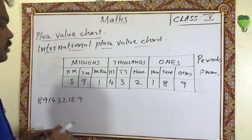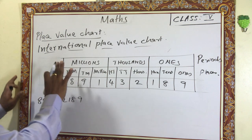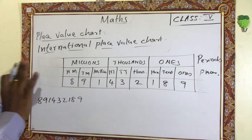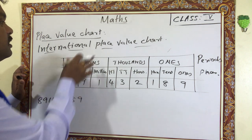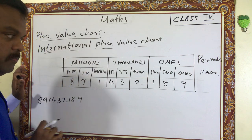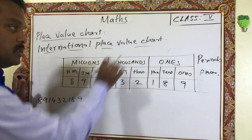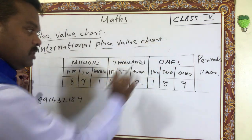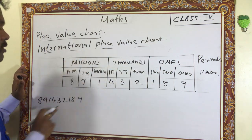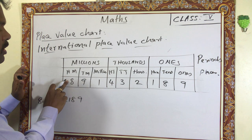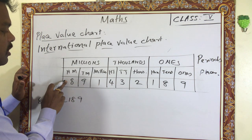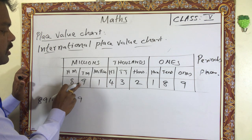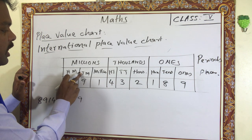Now how to read this number? First you have to read the millions column, then the thousands column, then the ones column. In the millions column we have eight, nine, one — that is eight hundred and ninety one million.